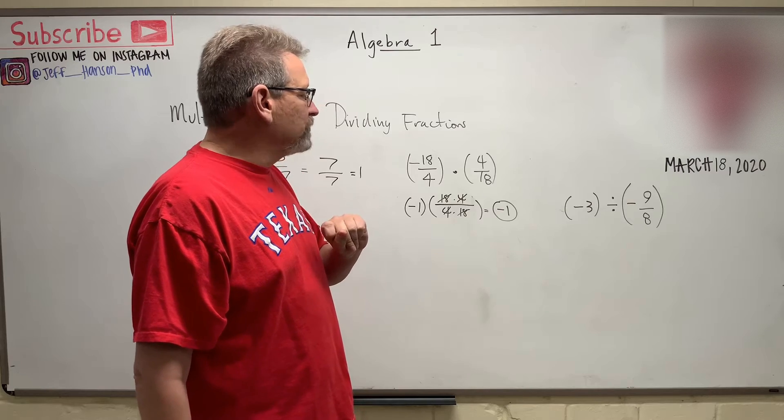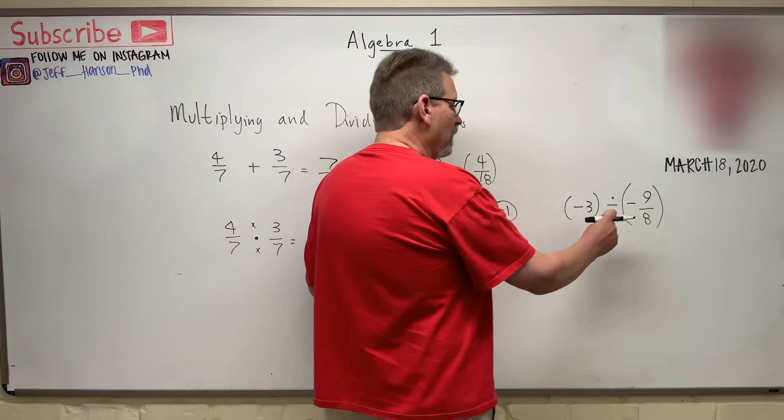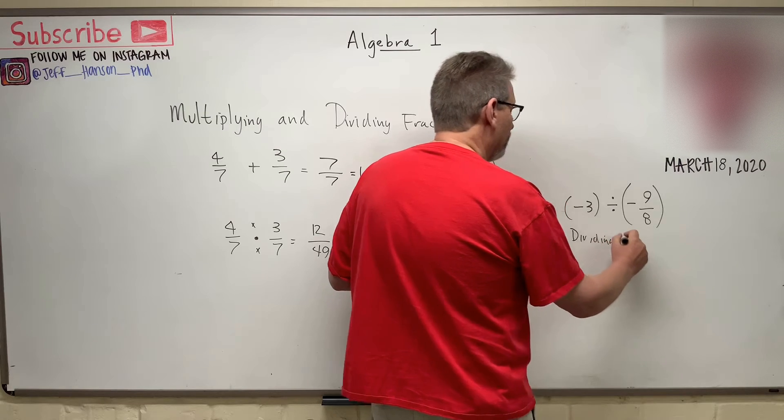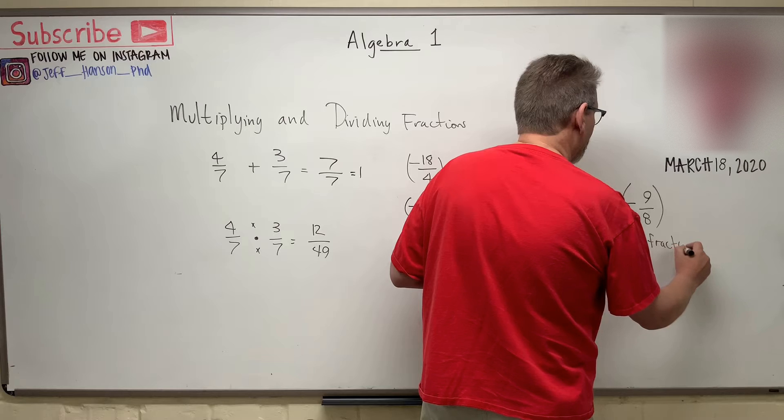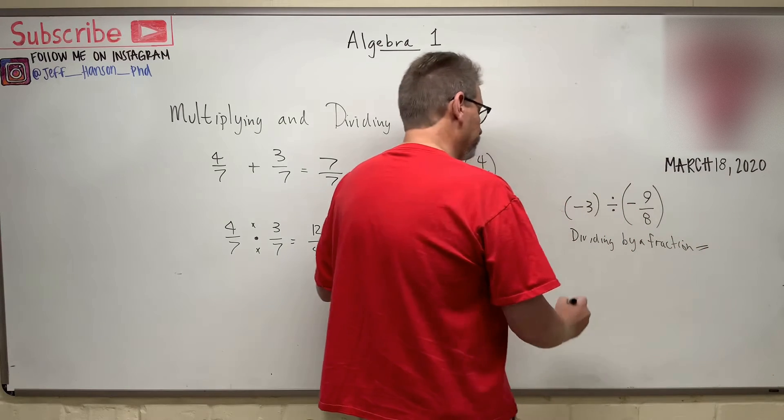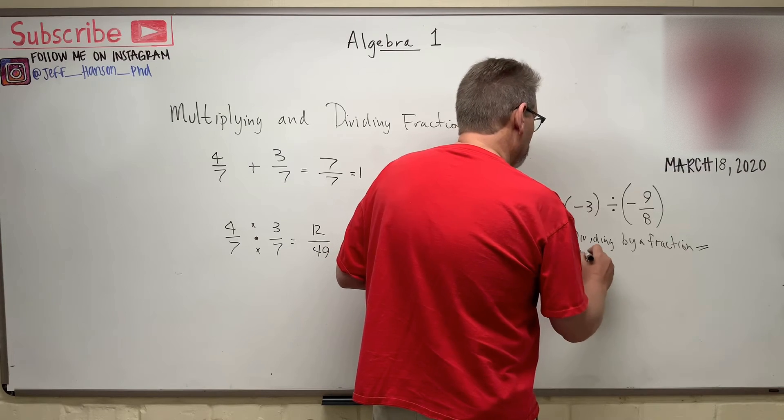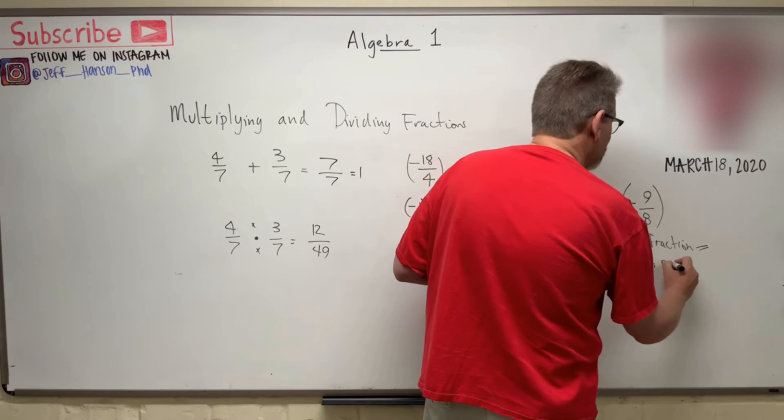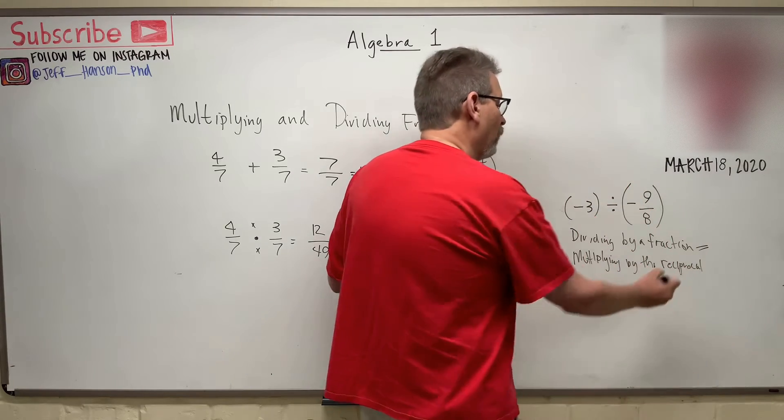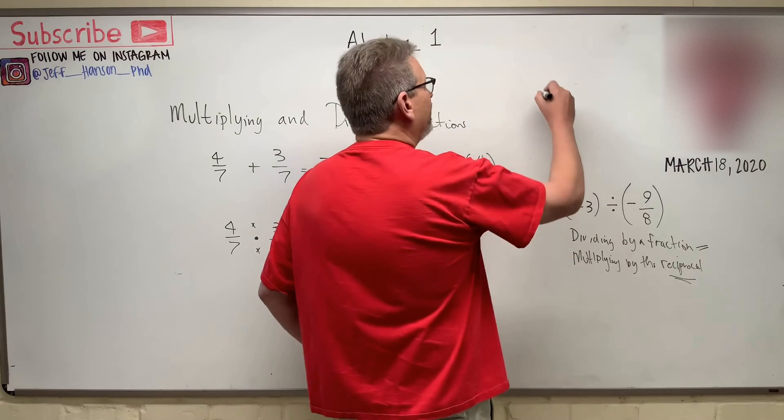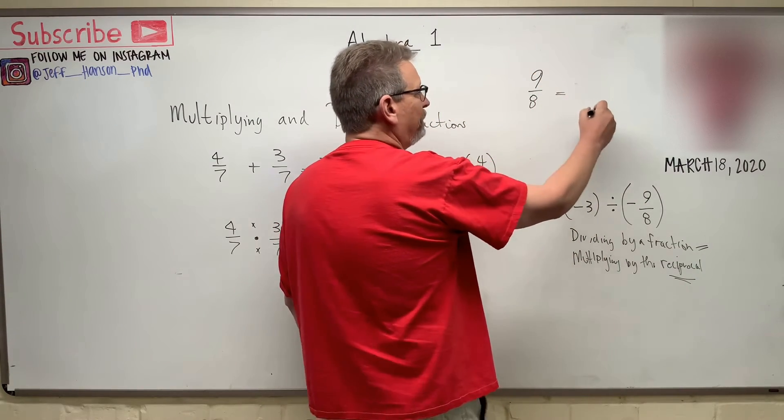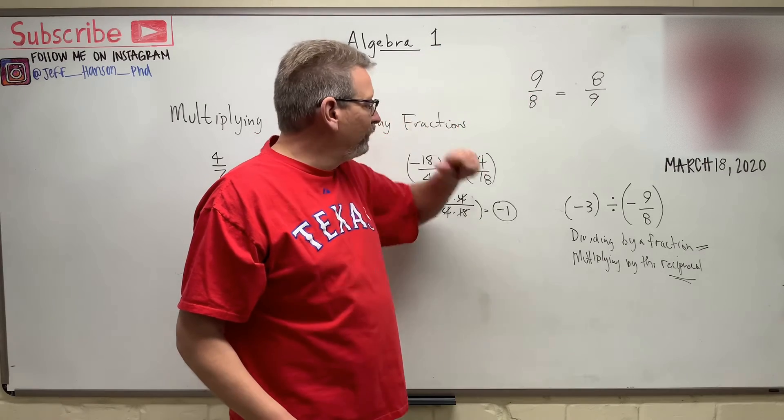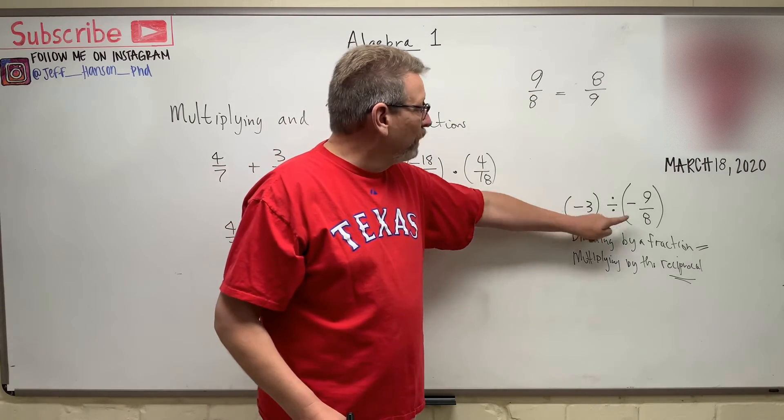And let's talk about one more trick that you need to know. When you divide by a fraction, dividing by a fraction is equal to multiplying by the reciprocal. And what is a reciprocal? What in the world does that mean? If I have 9 over 8, its reciprocal is 8 over 9. It's just the fraction flipped, all right? That's all the reciprocal means. So what this says is that instead of dividing, I can multiply by the reciprocal.